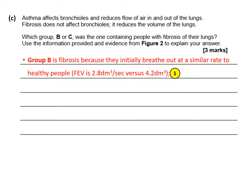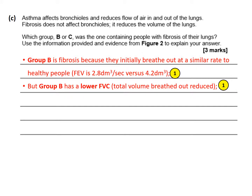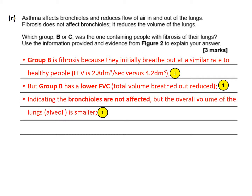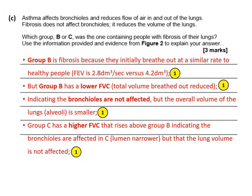The mark scheme confirms that Group B has fibrosis: they breathe out at a similar initial rate to healthy people but have a lower FVC, indicating reduced lung volume due to fibrotic lesions or scarring, not bronchiole obstruction. Group C has a higher FVC that rises above Group B, indicating the bronchioles are narrowed — consistent with asthma — but lung volume is not reduced. This approach secures three out of three marks.